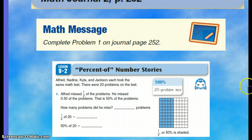Alfred missed half of the problems. So he missed about 0.50 of the problems, and that is 50 percent of the problems. So how many problems did he miss? Well, you have to make sure you're looking at the 100 percent is a 20 problem test. So how many problems did he miss?